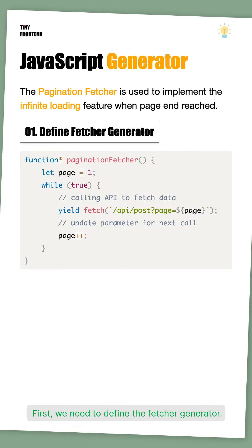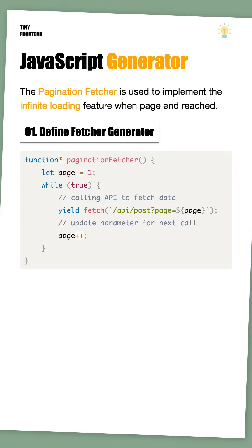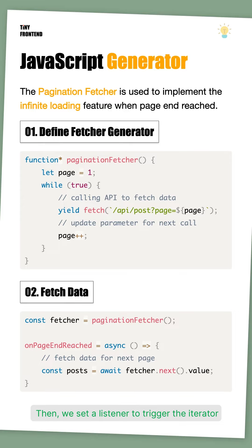First, we need to define the fetcher generator. The generator enters an infinite loop using while. This loop is intentional because the generator will be paused after each API call. Then, we set a listener to trigger the iterator for the API fetching without any parameter.